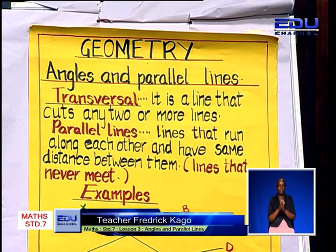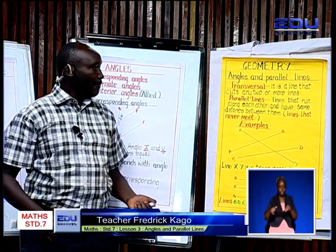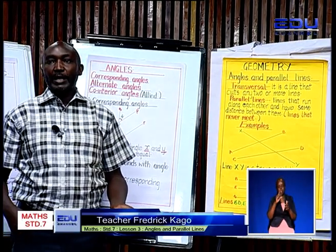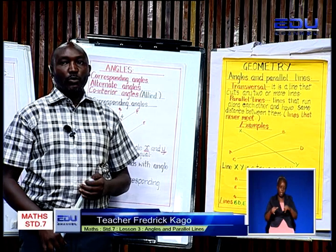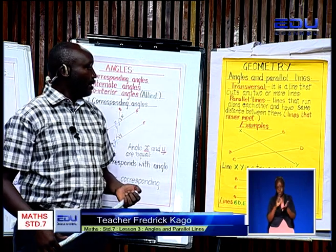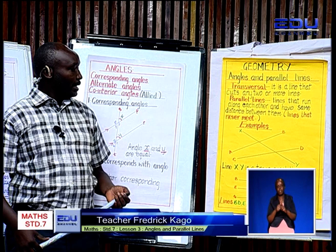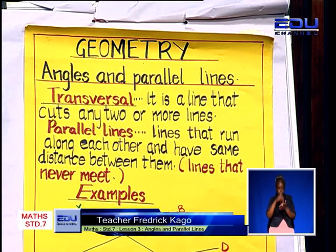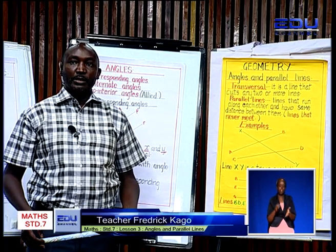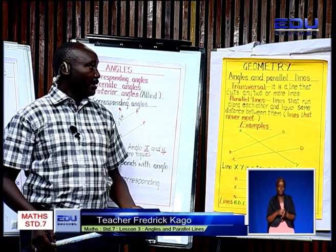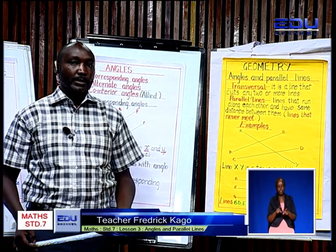To start us off, we're going to start with a transversal line, define it, and see what a transversal line is. Then we shall look at the different types of angles. Then we shall also have an activity that involves angles and parallel lines.